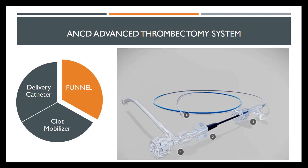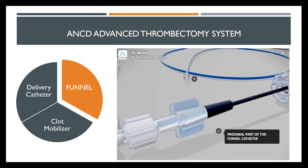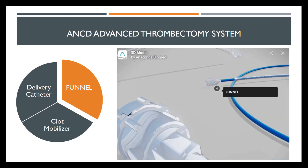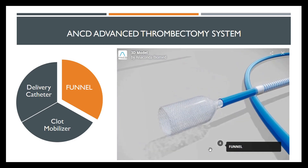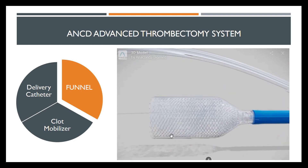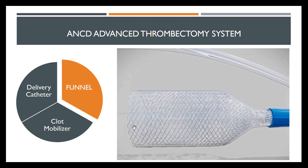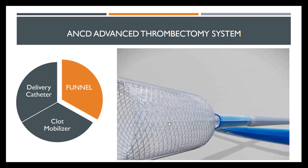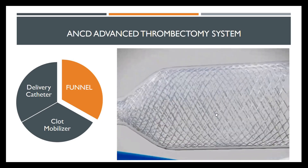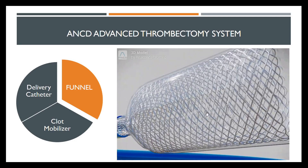This new device is comprised of two coaxial catheters and a clot mobilizer. The delivery catheter allows to reach the damaged neurovascular area, while the funnel allows to block the blood flow, combining the aspiration technique with the clot mobilizer. The funnel is a braided tubular structure with a thin layer of silicon, as you can see in the video.